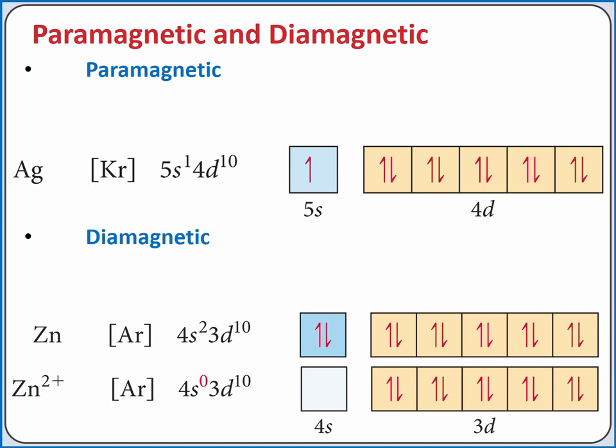A diamagnetic substance has no unpaired electrons and consequently will not be attracted to an external magnetic field. All of the electrons in zinc are paired.